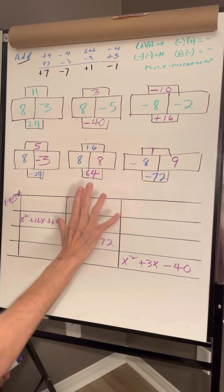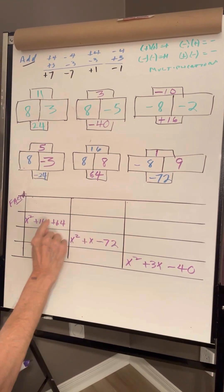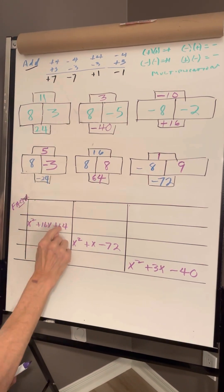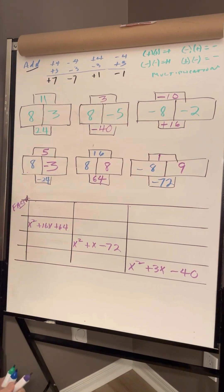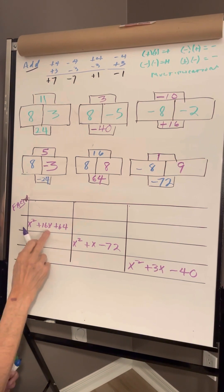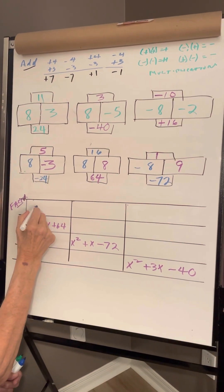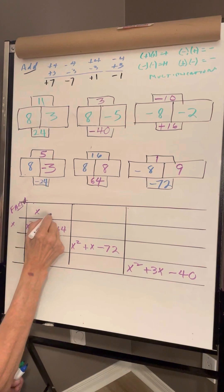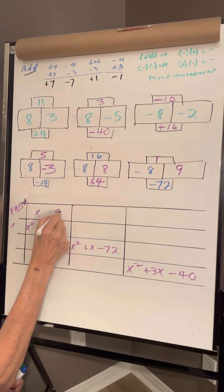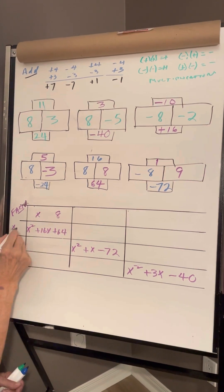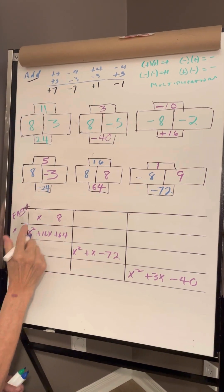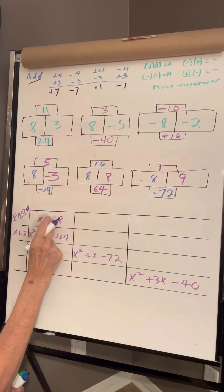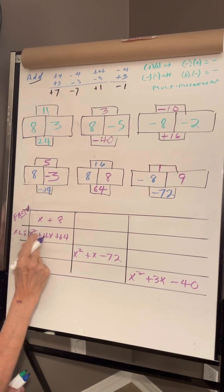The ideas here are the same as here. Addition, addition. Multiplication, multiplication. Okay, so here we're going to have x and x. 8 times 8 is 64, so it's 8. It's a plus, so they're both plus. 8 and 8 makes 16.